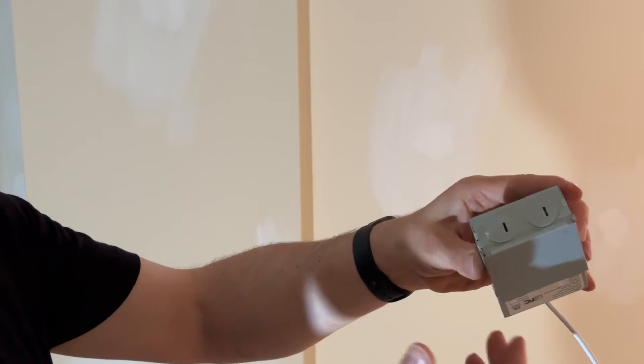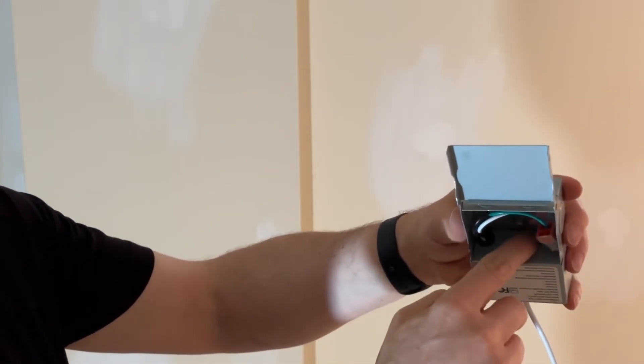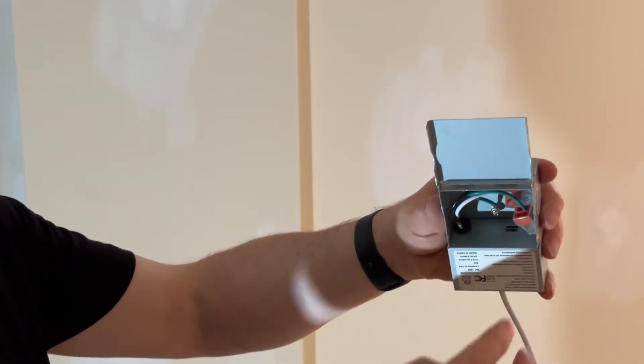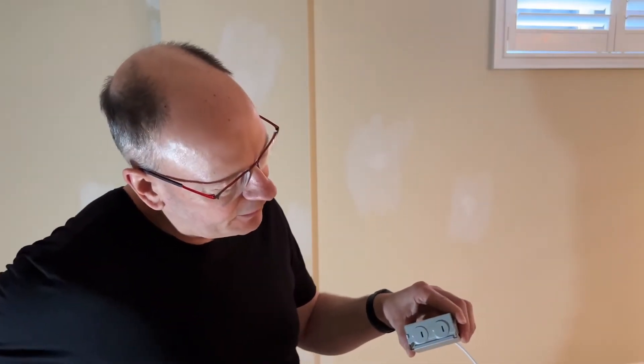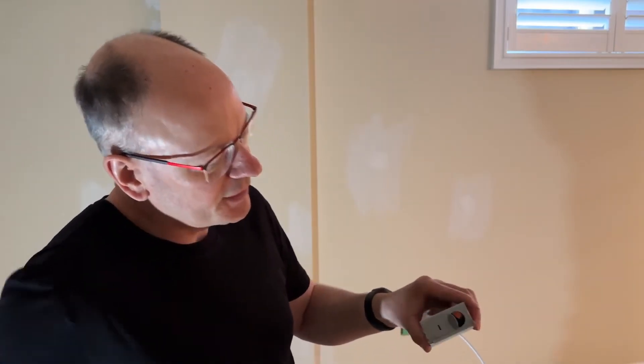So we're going to start by taking this knockout out and putting in a plastic cable clamp so that the cables are held securely to the box and then we can wire it up inside. Remember the switch in here is the color temperature and you may want to adjust that now if you know the color temperature that you want. So I'm going to go ahead and remove this knockout from this side here.